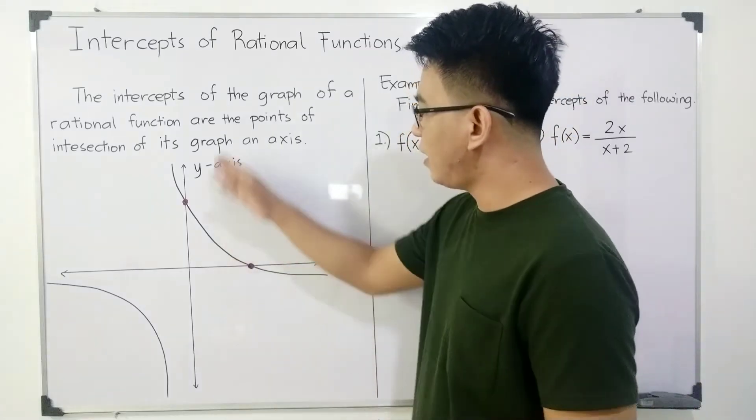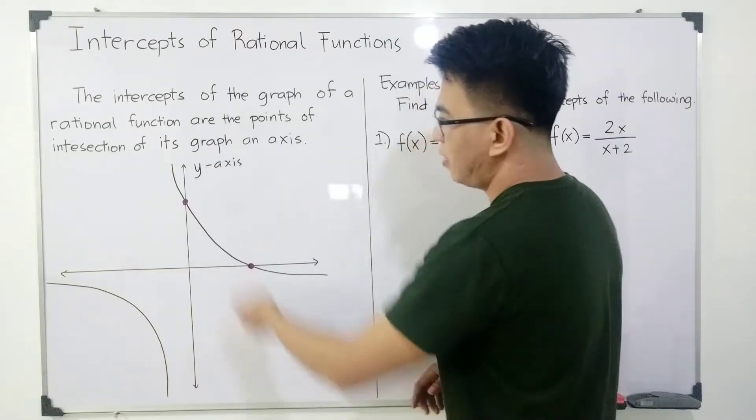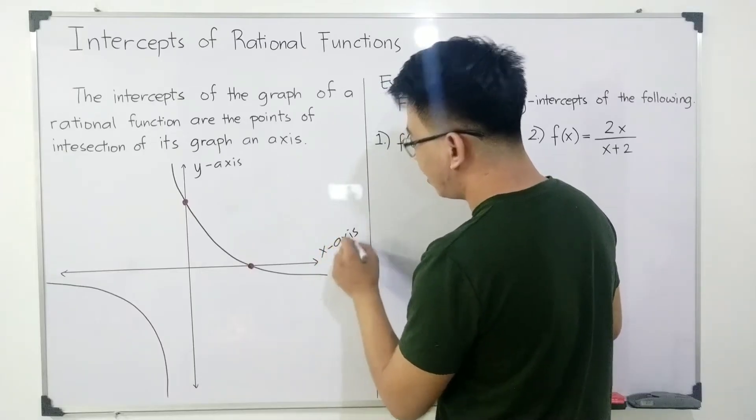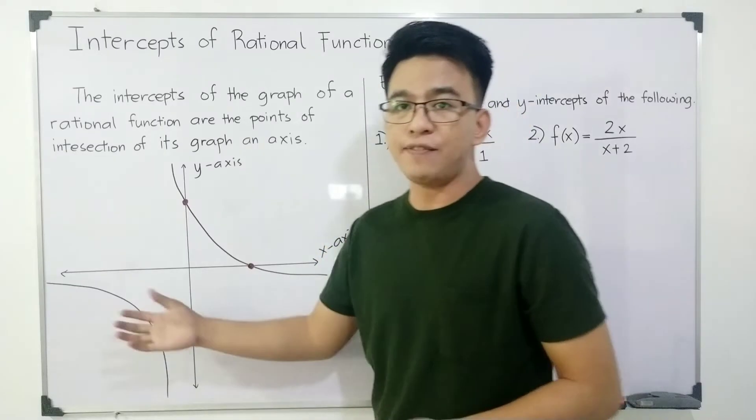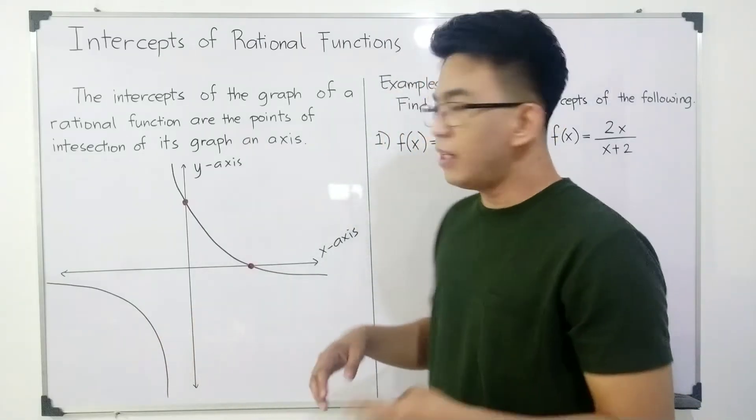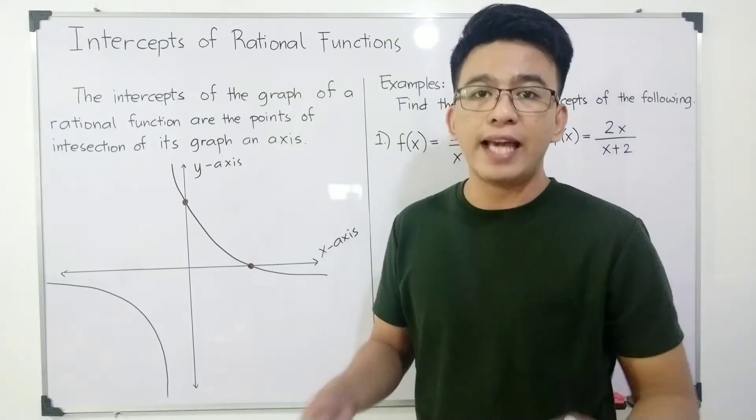So we have here the y-axis as your vertical number line and this is your x-axis. Now as you can see guys, I have here the graph of a random rational function wherein this is what we call x-intercept and y-intercepts.